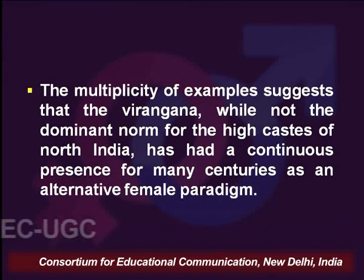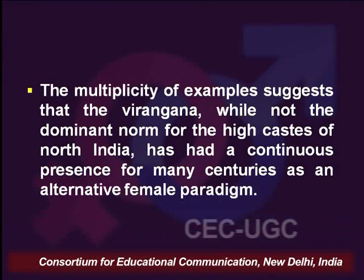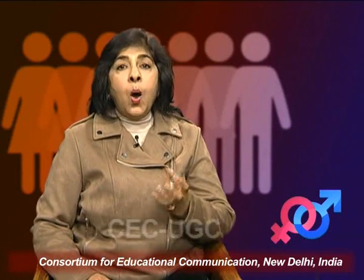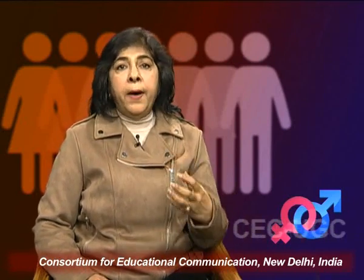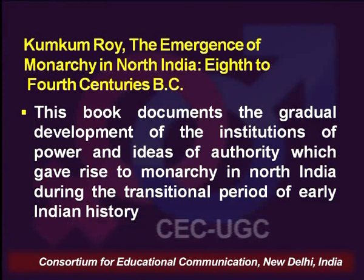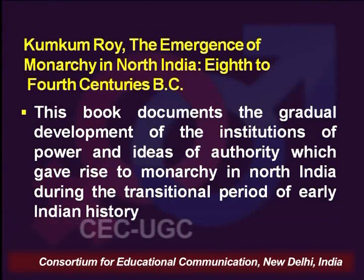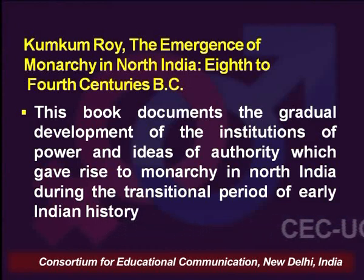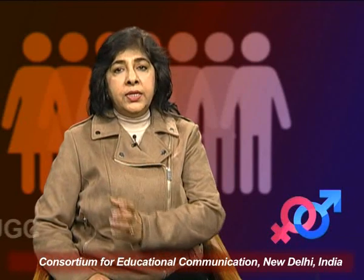Before continuing with the concept of Virangana, I would like to share a few readings which specifically focus on the issue of gender identity in early India and the emergence of monarchy in North India from the 8th to 4th century BCE. There is a book by Kumkum Roy, The Emergence of Monarchy in North India, which discusses the gradual development of institutions of power and ideas of authority giving rise to a specific form of monarchy in North India during the transitional period of early Indian history — the transition from Rig Vedic society to the later Vedic and post-Vedic period.